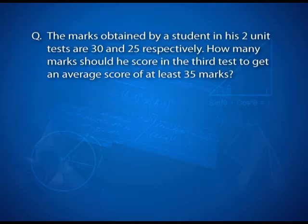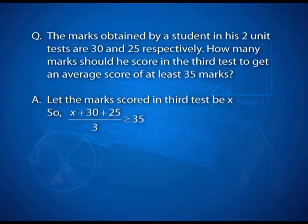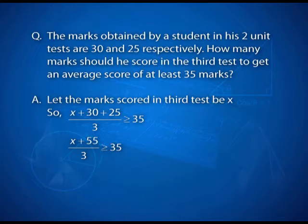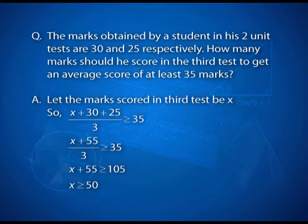Let us take up some more real life applications of linear inequalities in one variable. The marks obtained by a student in his two unit tests are 30 and 25 respectively. How many marks should he score in the 3rd test to get an average score of at least 35 marks? Let the 3rd test mark be x. Therefore, (x + 30 + 25) / 3 ≥ 35, so x + 55 ≥ 105, or x ≥ 50. Hence, the student should score at least 50 marks to get the desired mean.